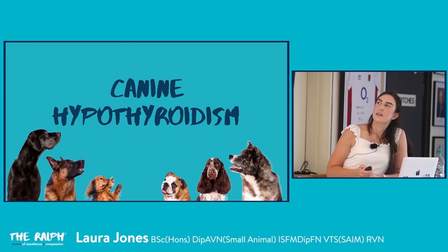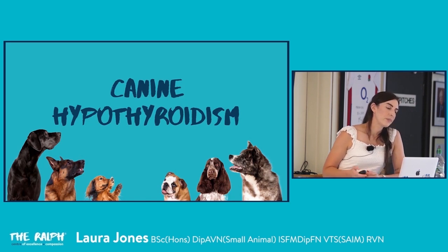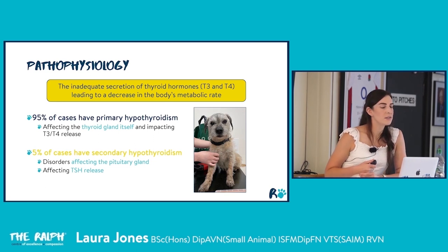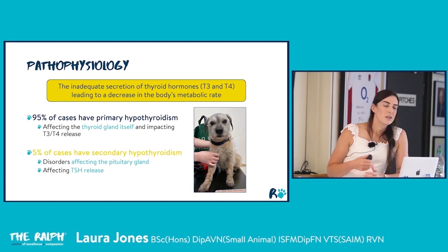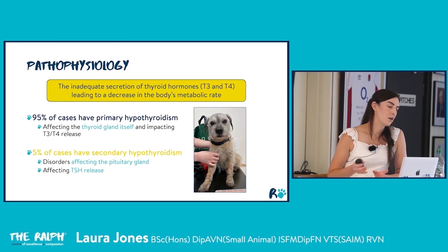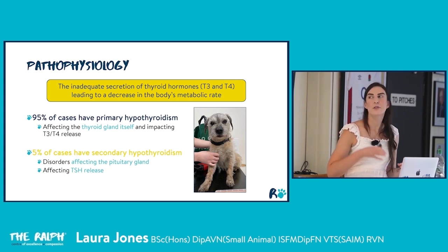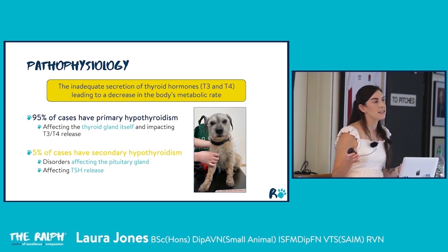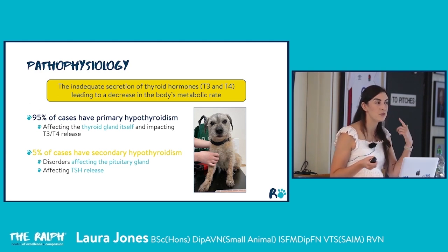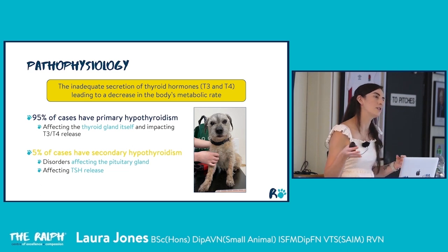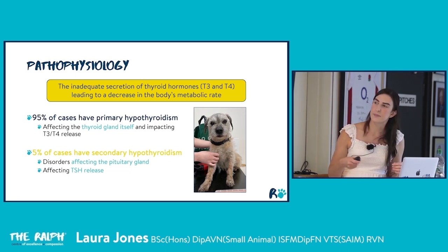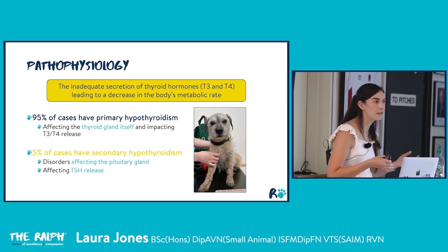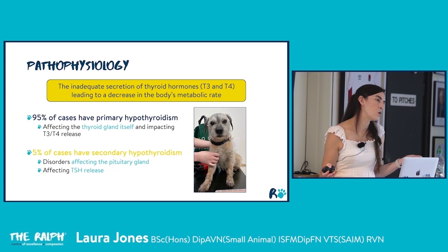Hypothyroidism is the most common thyroid disorder in dogs — an inadequate secretion of thyroid hormones leading to a decrease in metabolic rate. The majority have primary hypothyroidism, where a disorder affecting the thyroid gland itself — typically immune-mediated damage — prevents adequate thyroid hormone release. In rare cases, secondary hypothyroidism occurs when something has damaged the pituitary gland, affecting its ability to stimulate the thyroid. For example, treating acromegaly by removing the pituitary gland removes thyroid-stimulating hormone secretion, causing hypothyroidism.